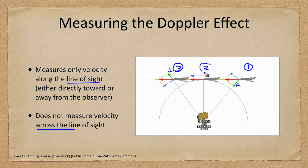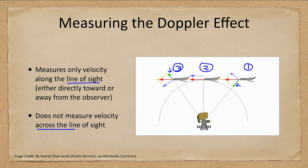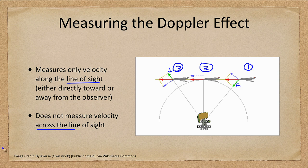So at position two there is no Doppler shift. There is no Doppler effect because that plane is moving directly across the line of sight and not neither toward nor away from the observer.